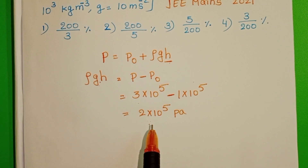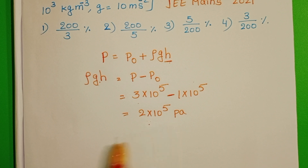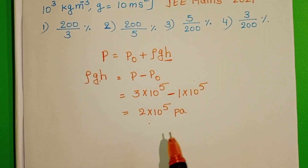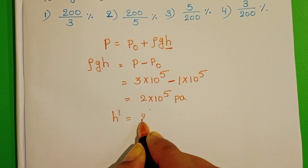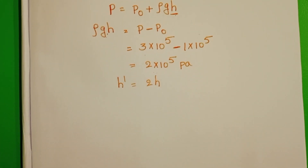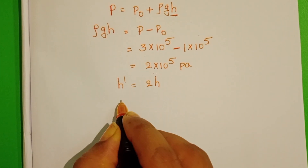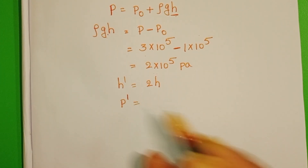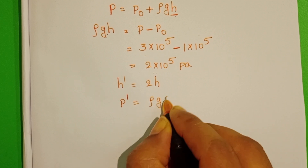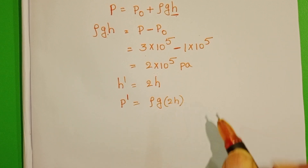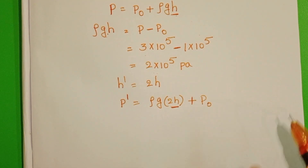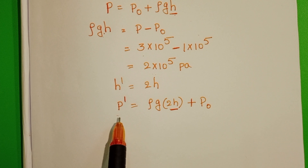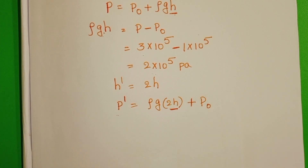This is the pressure acting on the submarine only because of the fluid at the given depth. When the depth is doubled, the total pressure acting on the submarine, P dash, equals ρg × 2H plus atmospheric pressure.